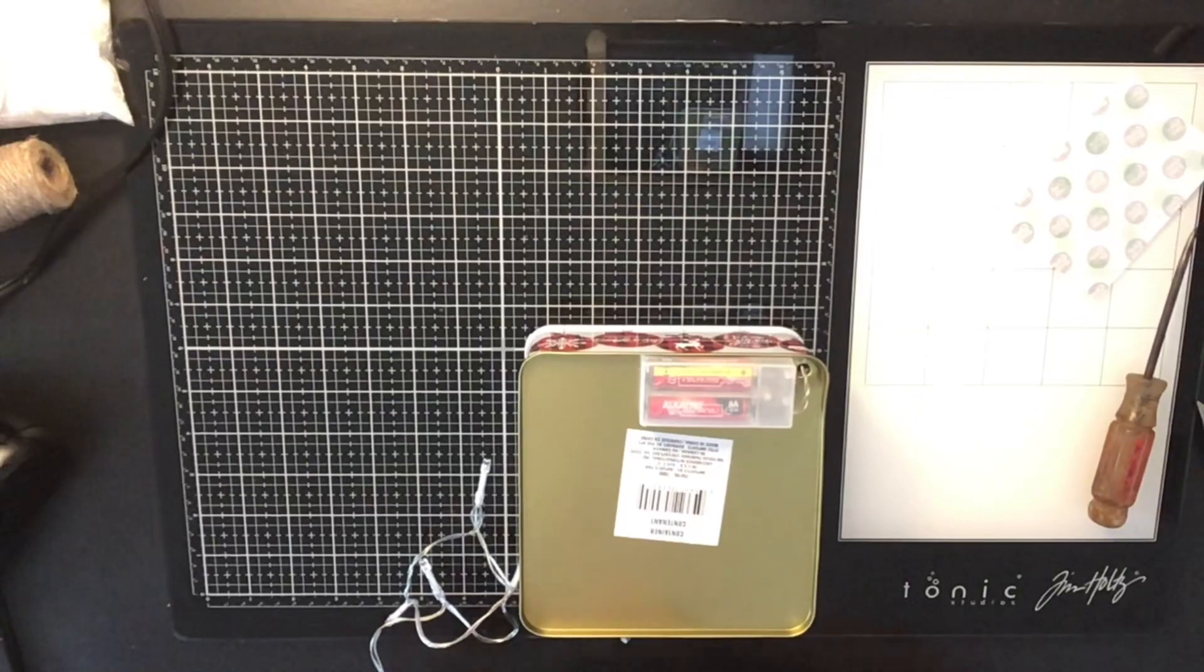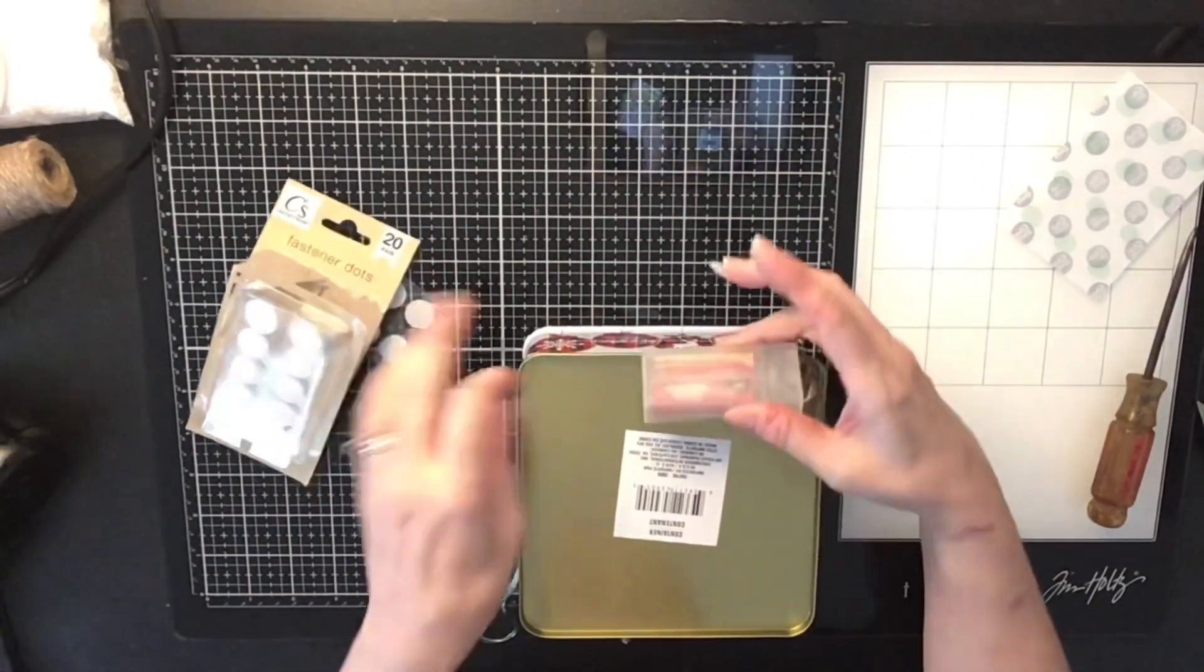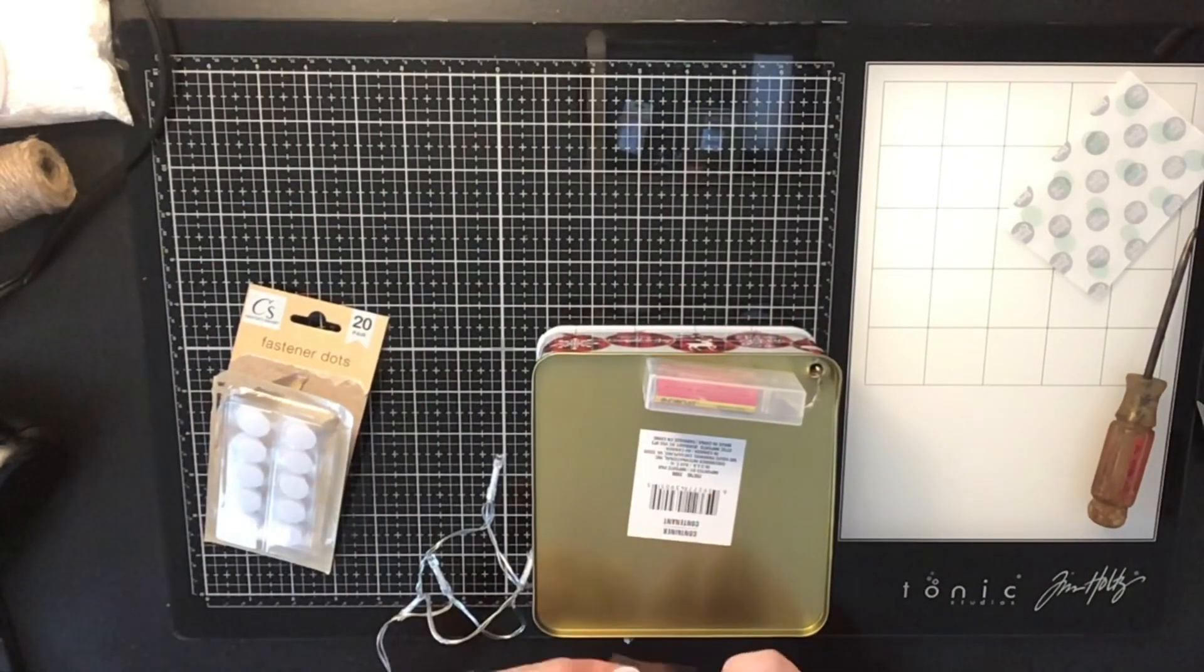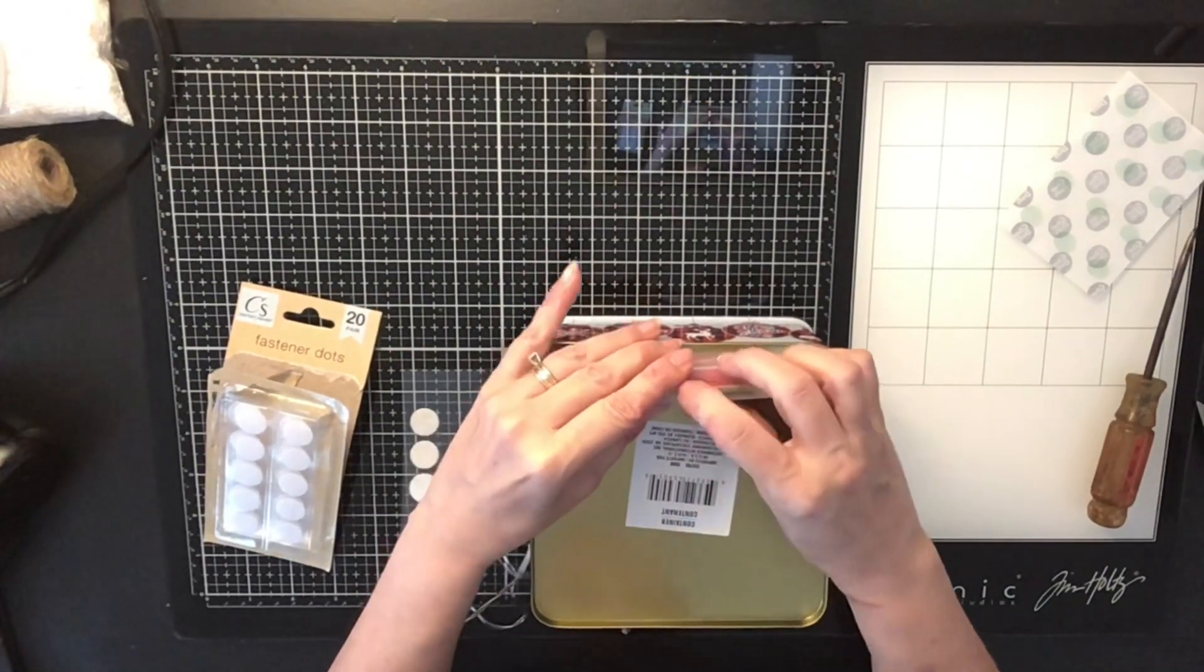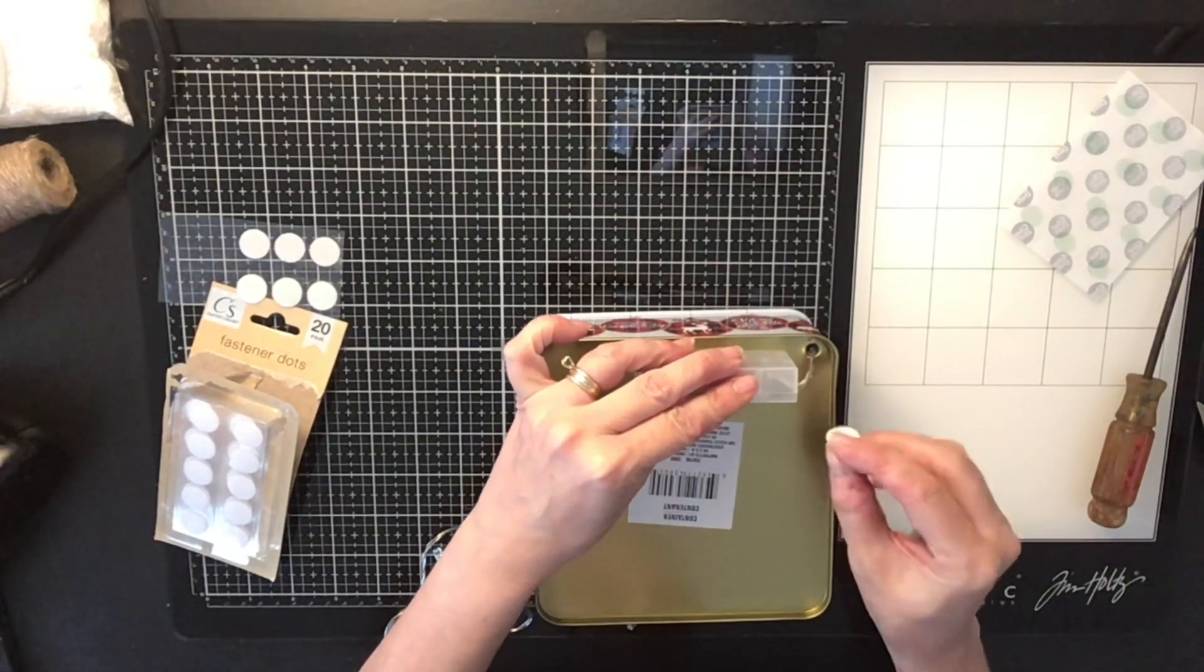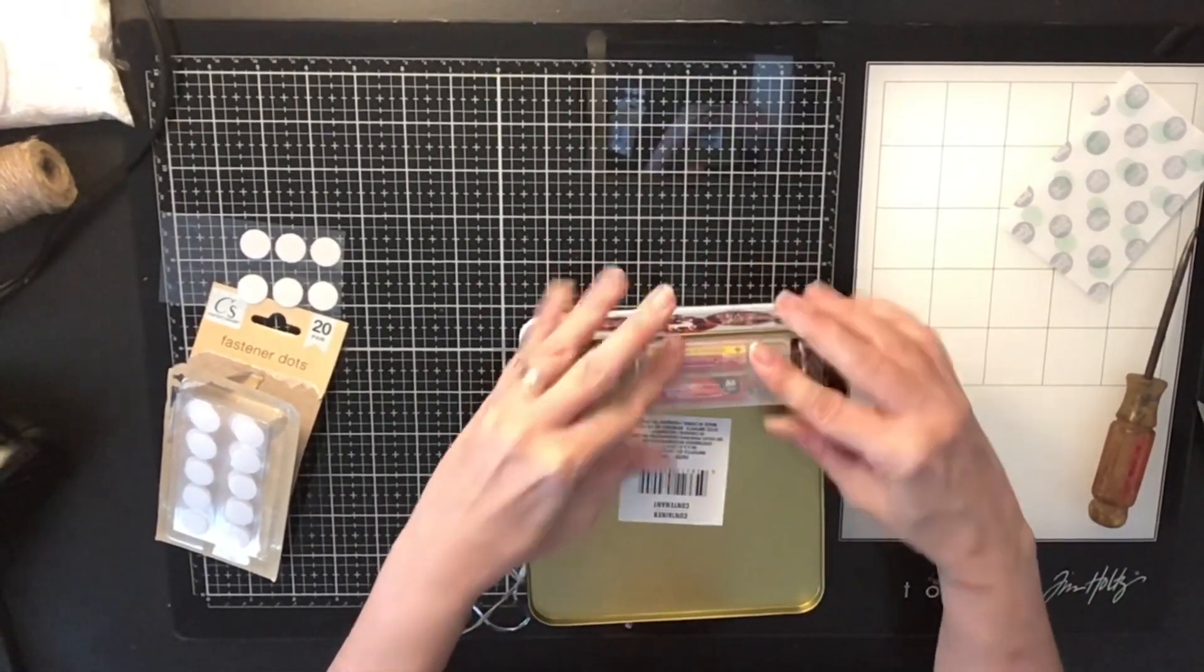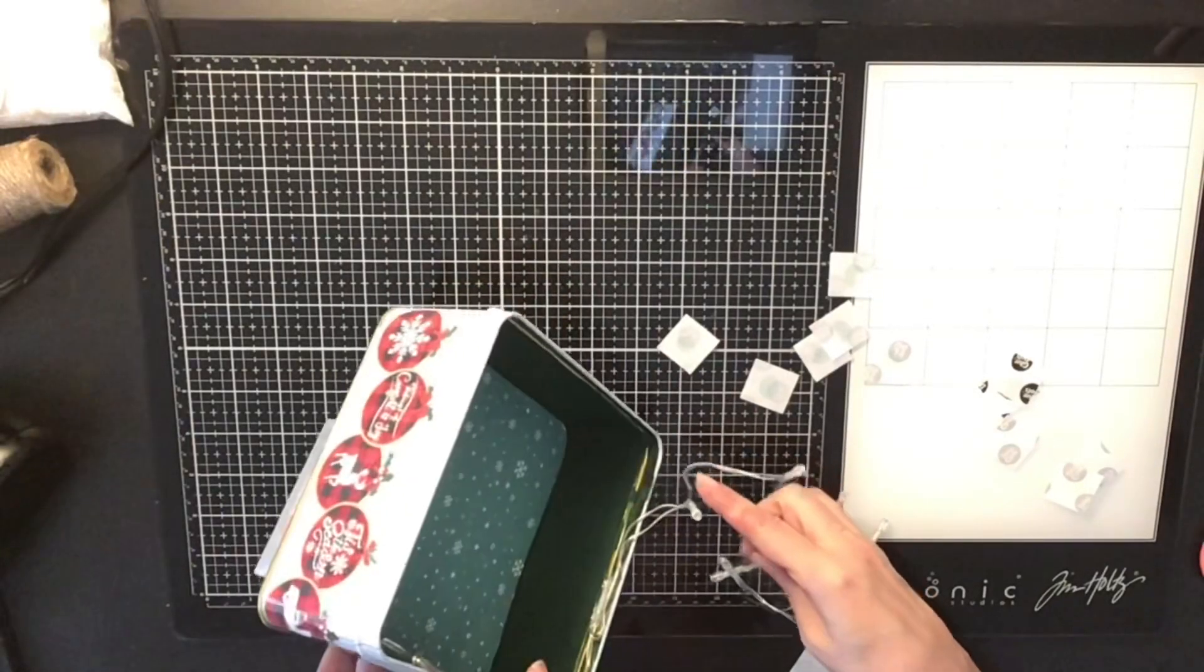So what I did is I found these little fasten dots at the Dollar Tree as well. And I'm just going to stick them on. And all they are is velcro. So you got each side and I just stick them down and then it's going to stick to the back of my tin. Very simple. You can get a whole package of these which is super cool because you can use it for other things as well. And now I'm just going to stick that down. And there's my battery pack. And I have it on the side so that I can flick my switch on and off whenever I want.